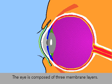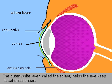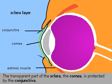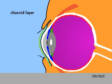The eye is like a camera. It has an envelope that holds a lens and instead of film, a retina that receives the image. The envelope of the eye is composed of three membrane layers. The outer white layer, the sclera, helps the eye keep its spherical shape. The transparent part of the sclera is the cornea, a kind of window to the eye and is protected by the conjunctiva.